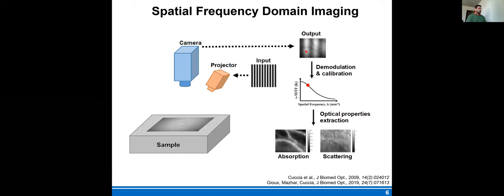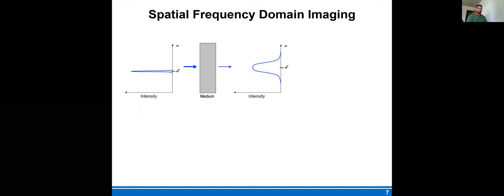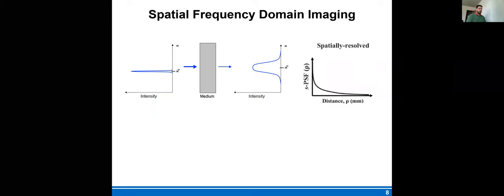So in a nutshell, what is spatial frequency domain? It simply uses a projector to project structures of light, patterns of light onto the surgical scene, and a camera to capture this image and process the information to extract the interactions between light and tissues and the optical properties. If you take a point source, a little laser pointer for instance, and shine it on a diffuse medium, that point will be observed as a blur. This is characterized by what we call the spatial point spread function, which is the characteristic of this blurriness as a function of distance from the center of illumination. It turns out this spatial point spread function is linked to the absorption and scattering properties of the tissue.